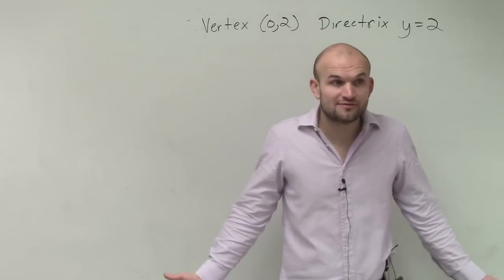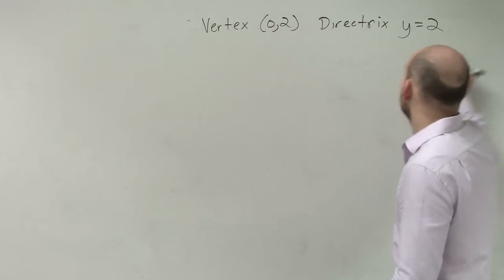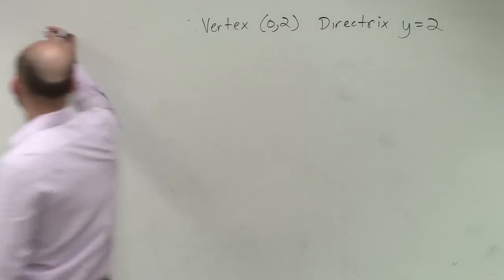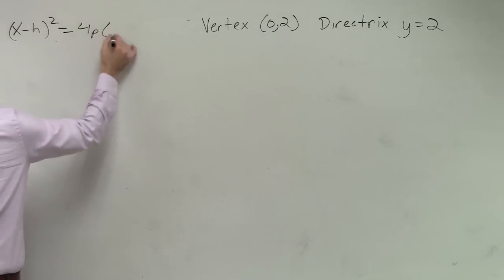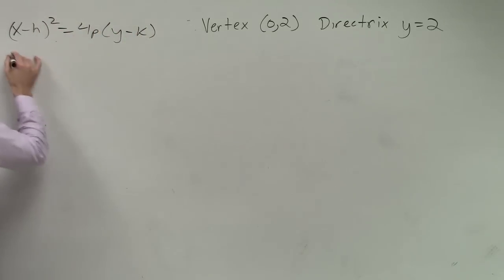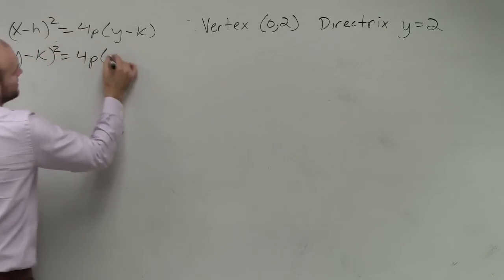So to find the standard form of the equation, we have two equations, right? We have a standard form equation, we can write (x-h)² = 4p(y-k), or we could do (y-k)² = 4p(x-h).